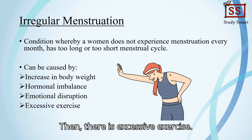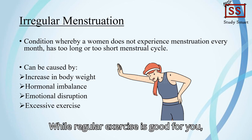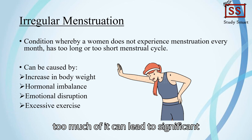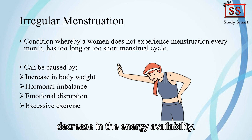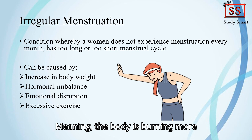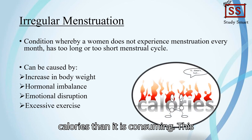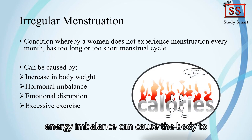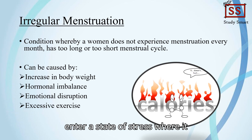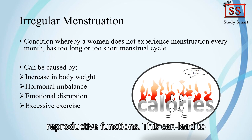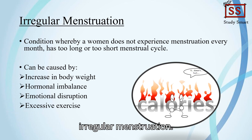Then there is excessive exercise. While regular exercise is good for you, too much of it can lead to a significant decrease in energy availability — meaning the body is burning more calories than it is consuming. This energy imbalance can cause the body to enter a state of stress where it prioritizes vital functions over reproductive functions, leading to irregular menstruation.